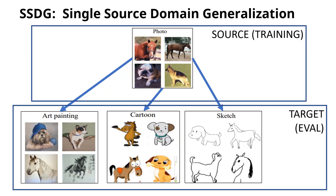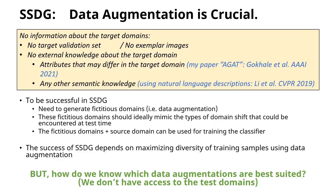Single source domain generalization is a setting where only one training domain is available, but we want a classifier to also generalize to other domains such as art, cartoons, sketches, and so on. In order to improve performance on such large domain shifts, we need to expose the classifier to diverse inputs, and this can be achieved with data augmentation.